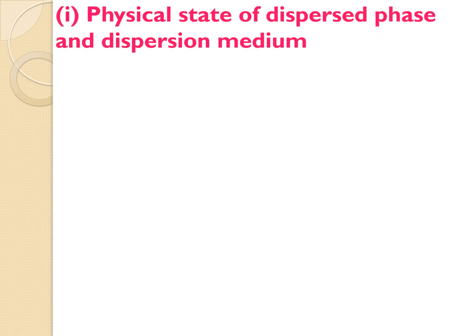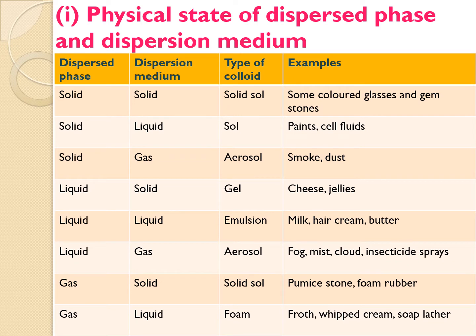Let us study the classification of colloids on the basis of physical state of dispersed phase and dispersion medium. Colored glasses or gemstones have both dispersed phase and dispersion medium as solid — they are known as solid sol. Paint and cell fluids are known as sol, with dispersed phase as solid and dispersion medium as liquid. Smoke and dust, known as aerosol, have dispersed phase as solid and dispersion medium as gas.